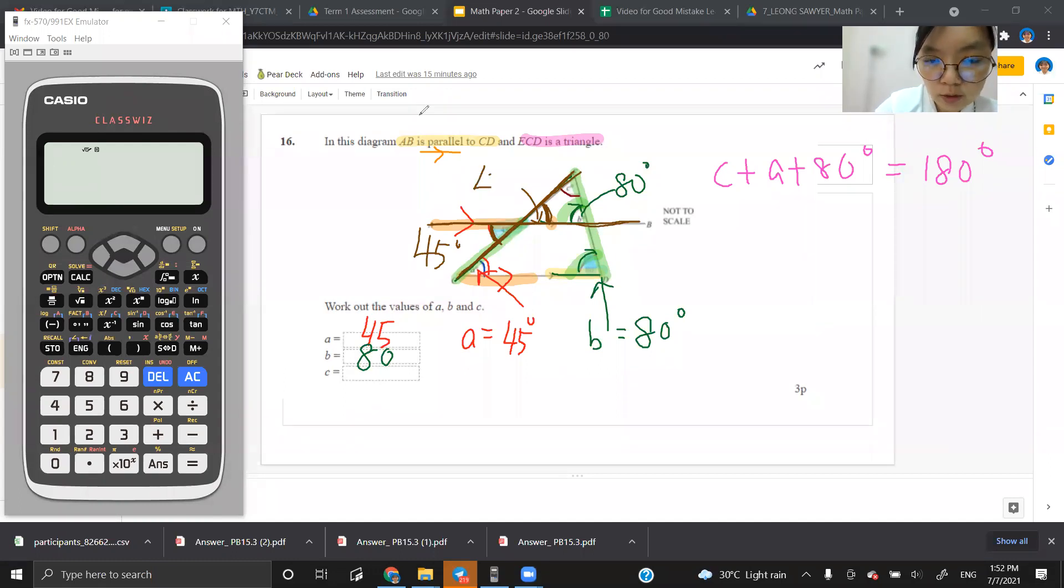So if this is 45, then I can zoom in into this triangle, the triangle here. So in this triangle, I have my C here, the angle that I want to find. I have my 80 here. And I also have my 45 here.